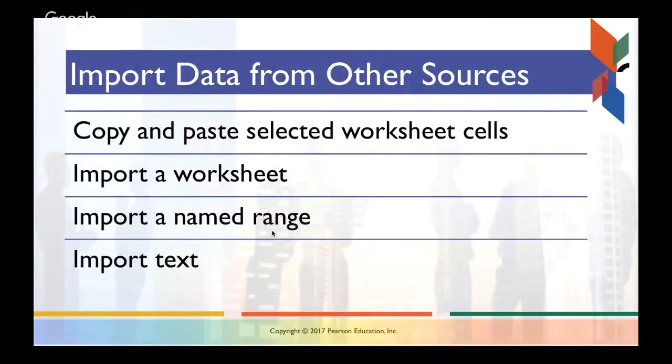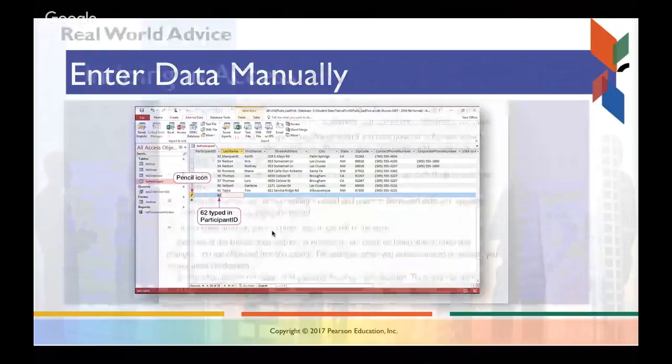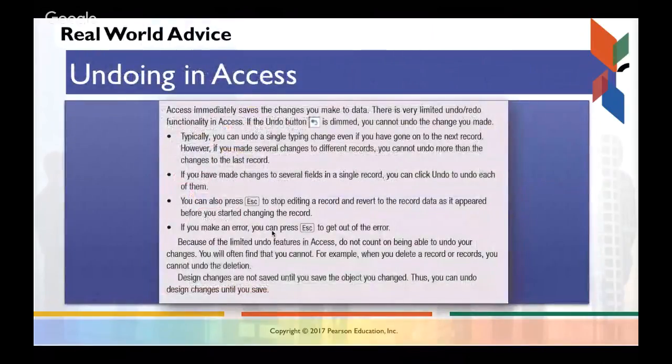So importing data from other sources. You'll figure out how to do this in your exercises. But I do want to make you aware of undoing. Undoing and redoing is limited in Access. It's a little more difficult because it has to do a lot in the background. And we're going to talk a little later about referential integrity. That basically means that if you delete a field in a related table that has a related entry, it's going to delete that data as well. So there's a lot of implications that come with undoing and redoing that you don't necessarily see in Excel.